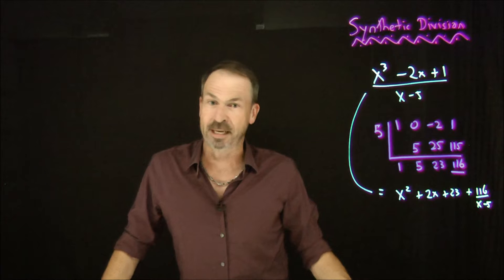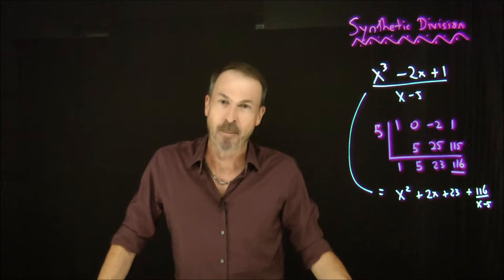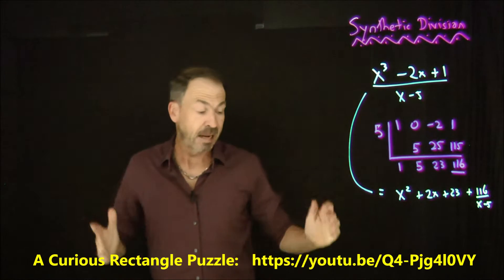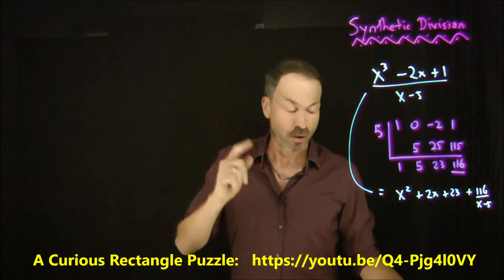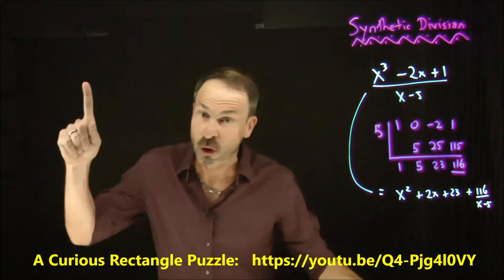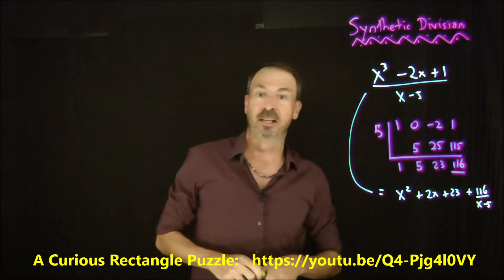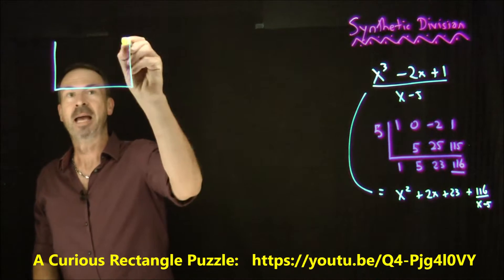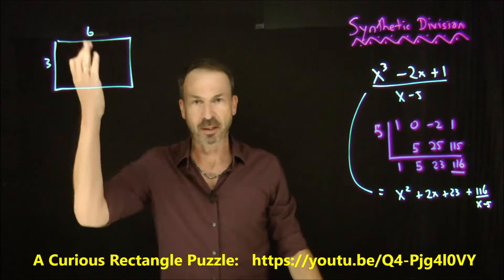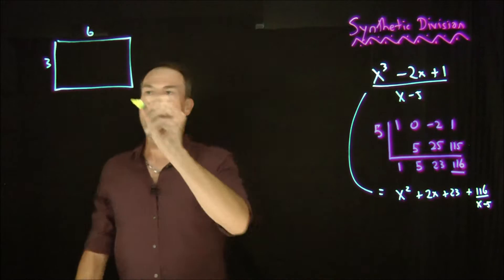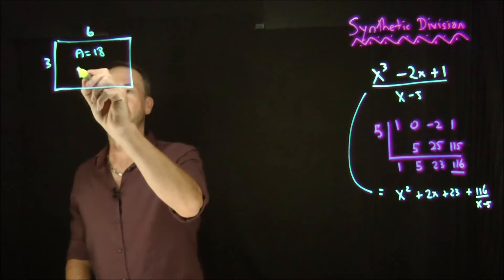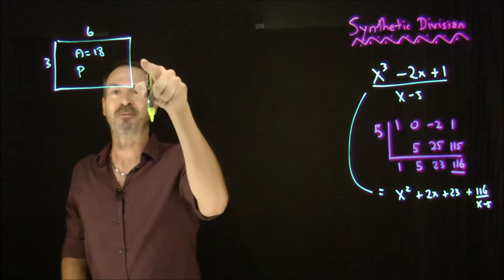So first of all, let me give you some context. I did an earlier video about rectangles whose perimeters and areas have the same numerical value. Going over that because it's a good motivation for synthetic division. I noticed that a 3 by 6 rectangle has area 3 times 6, which is 18 units squared, and perimeter 3 plus 6 plus 3 plus 6, which is 18 units.